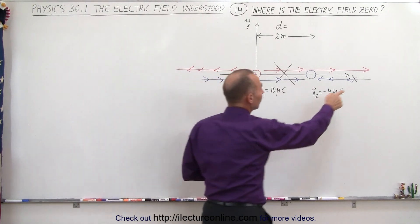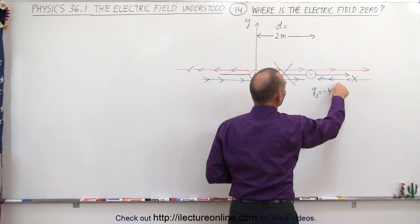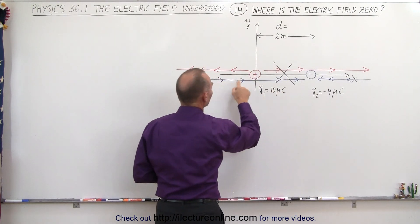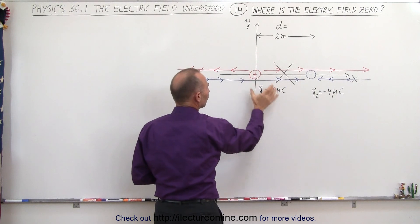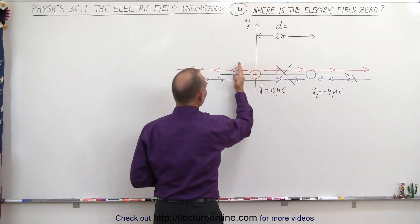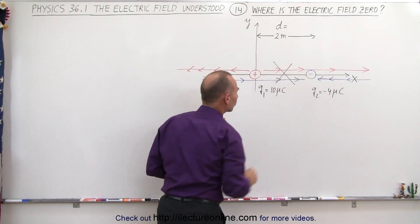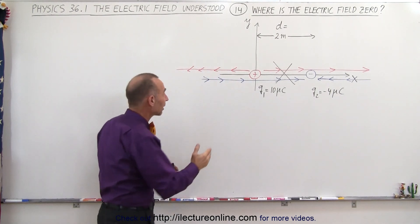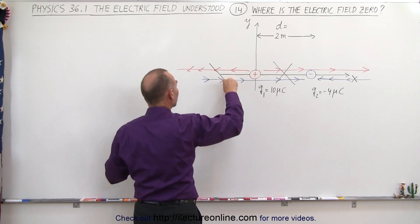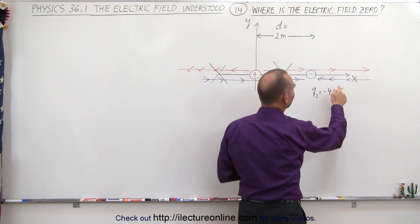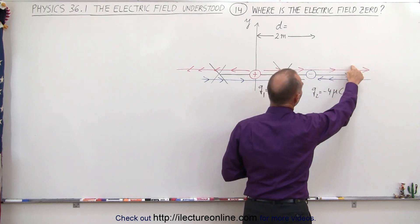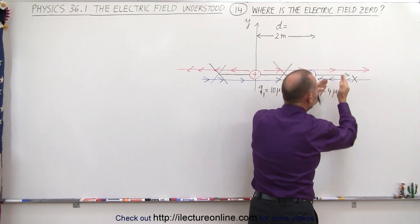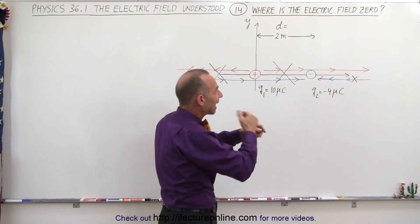In the region to the left of the positive charge, you're closer to that charge than to the negative charge. Since the positive charge is much larger, its electric field will always overpower the other, so you can never find a zero electric field there either. The only place where you could have a zero electric field is to the right of the negative charge, because that field is from a larger charge but farther away, while the field from the smaller charge is closer. There you could potentially have a point where the two cancel each other out.